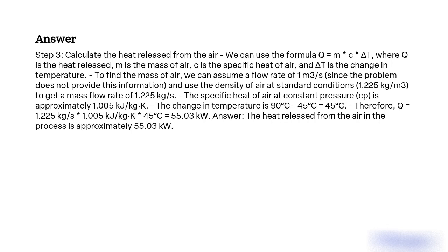The specific heat of air at constant pressure cp is approximately 1.005 kJ/kg·K. The change in temperature is 90°C - 45°C = 45°C. Therefore, Q = 1.225 kg/s × 1.005 kJ/kg·K × 45°C = 55.03 kW. Answer: The heat released from the air in the process is approximately 55.03 kW.